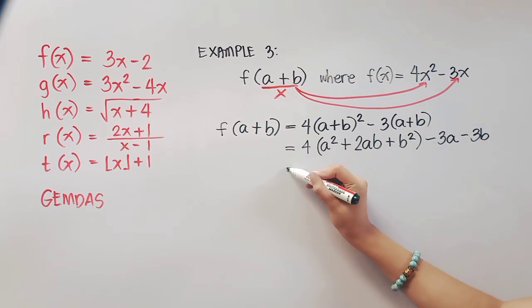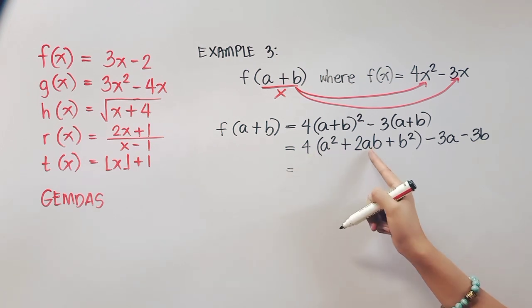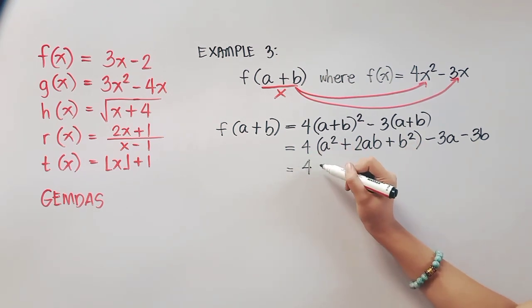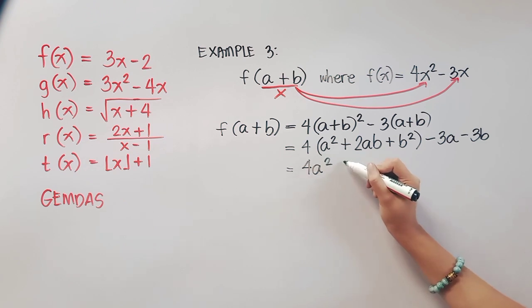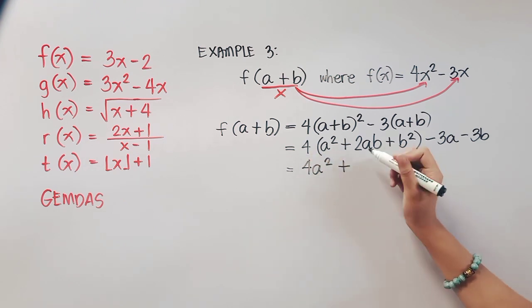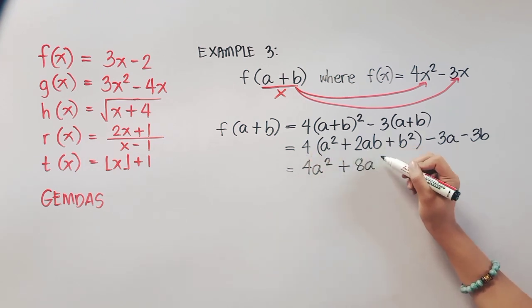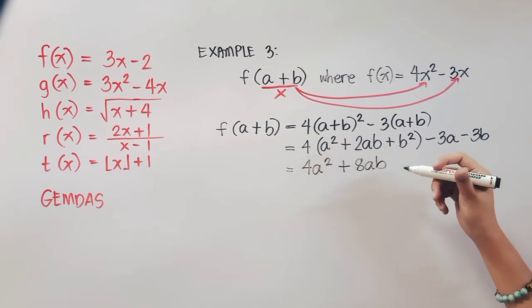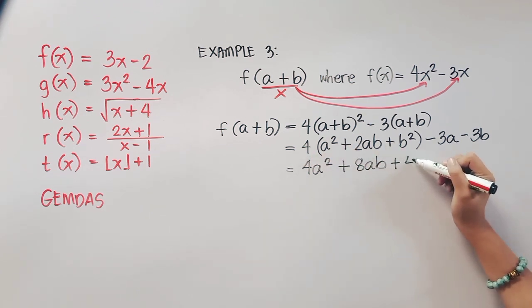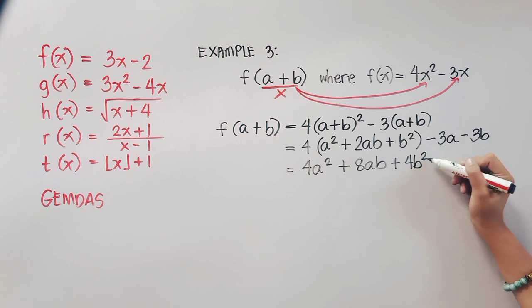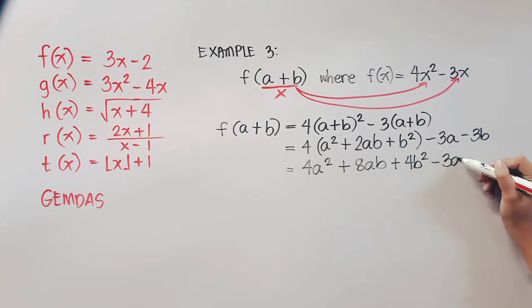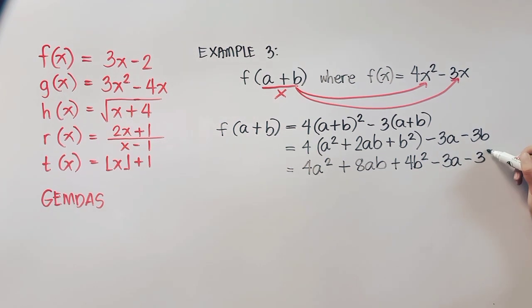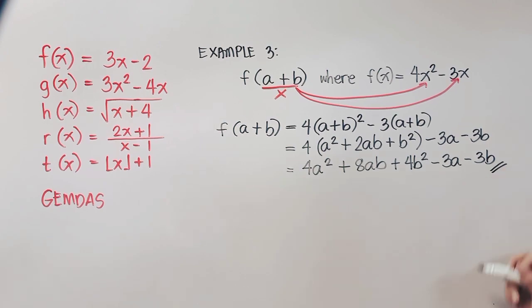Now let us multiply 4 on all terms here. So we have 4 times a squared is 4a squared. 4 times 2 is 8, copy ab. And then that is positive 4b squared. And then we'll just have to rewrite 3a minus 3b. There's no more like terms. Therefore this is our final answer.